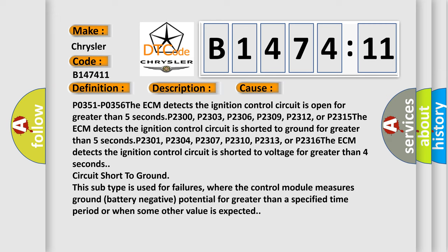Circuit short to ground: this subtype is used for failures where the control module measures ground battery negative potential for greater than a specified time period or when some other value is expected.